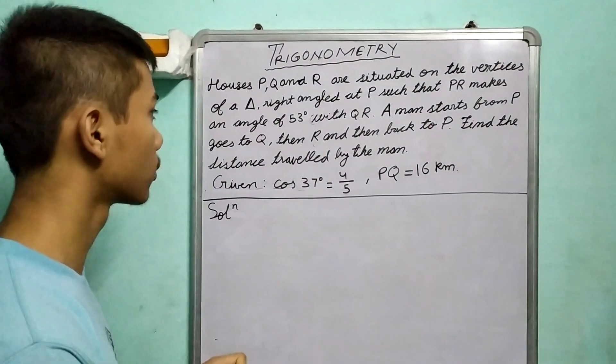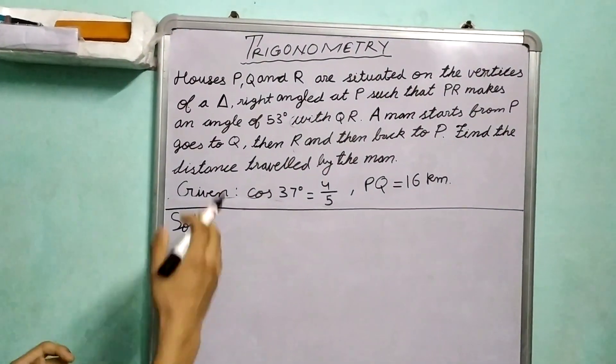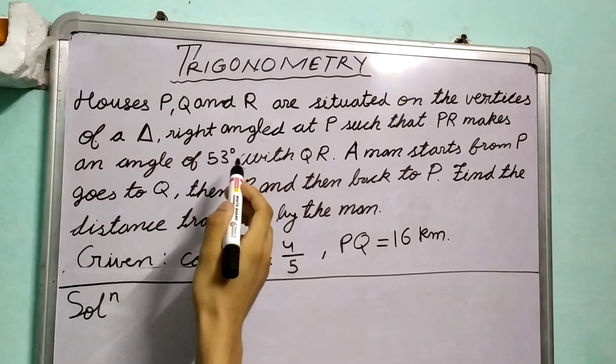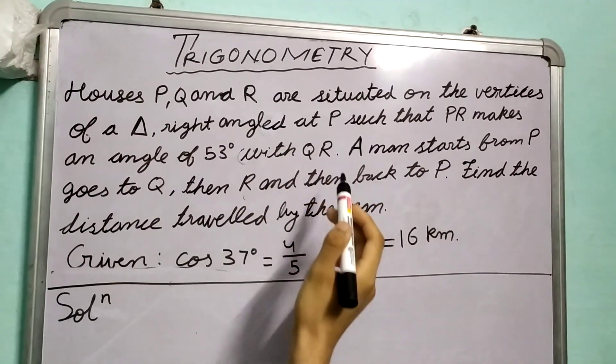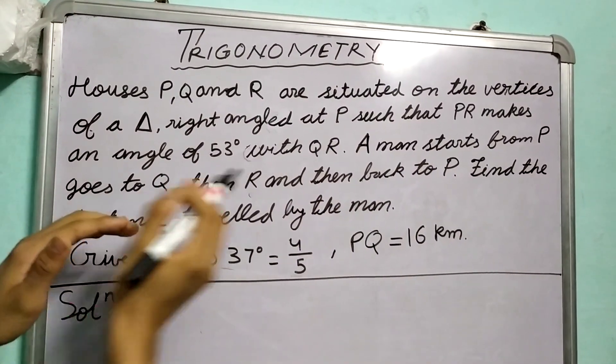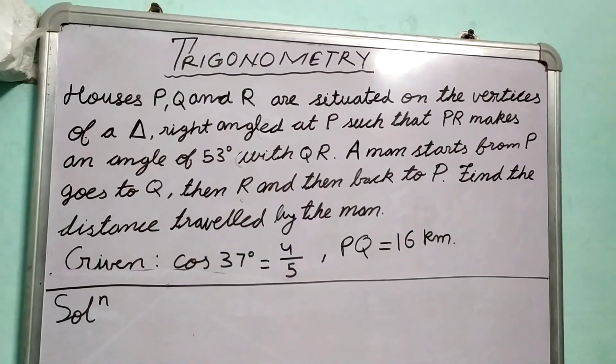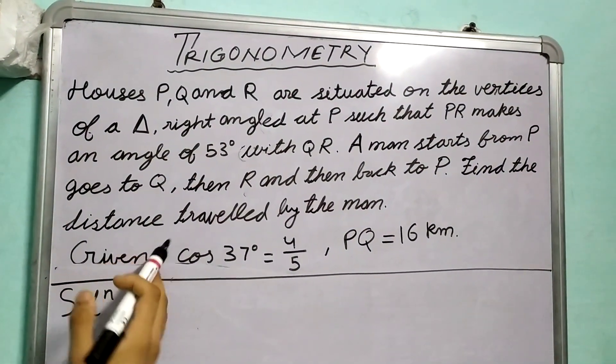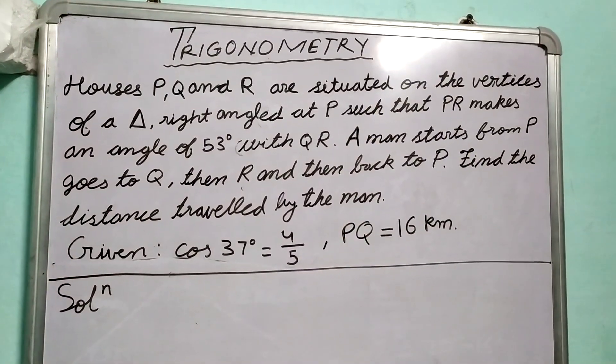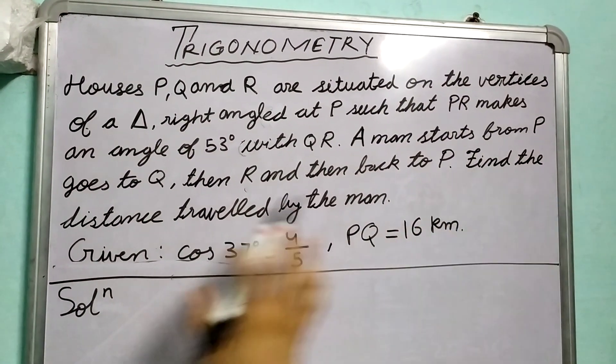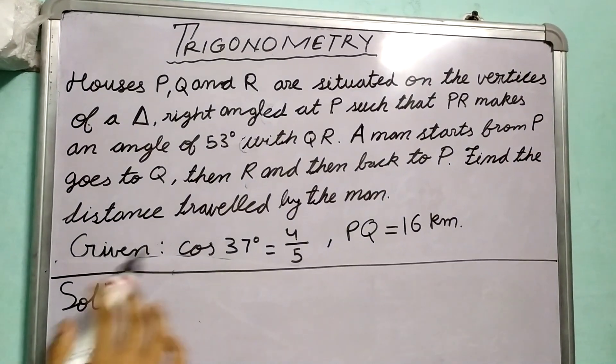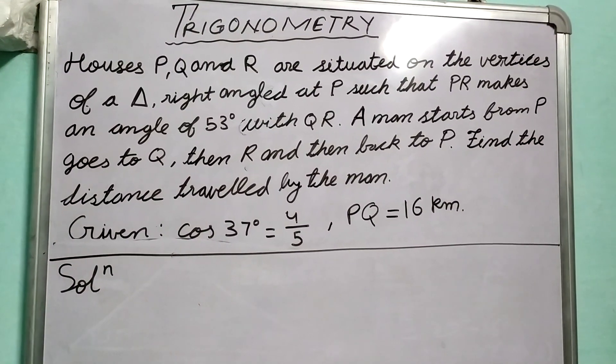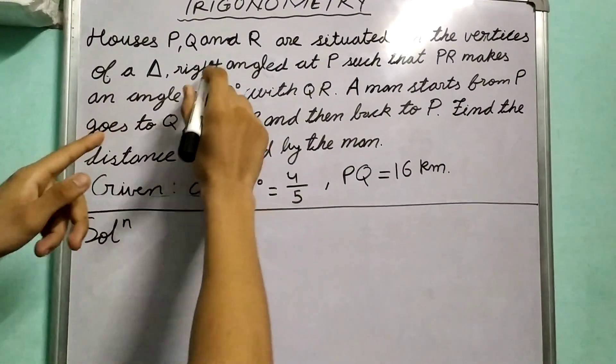Houses P, Q, and R are situated on the vertices of a triangle right-angled at P such that PR makes an angle of 53° with QR. A man starts from P, goes to Q, then R, and then back to P. Find the distance traveled by the man. We're given cos 37° = 4/5 and PQ = 16 km.